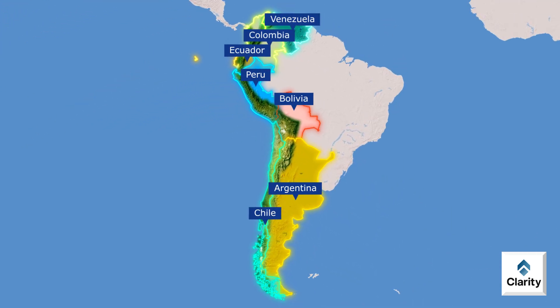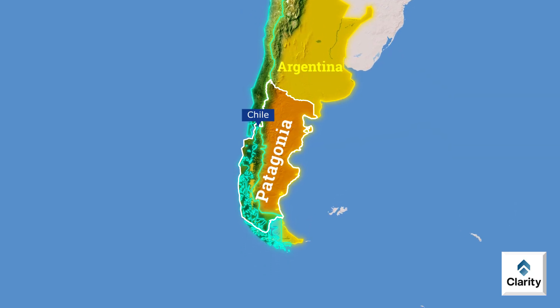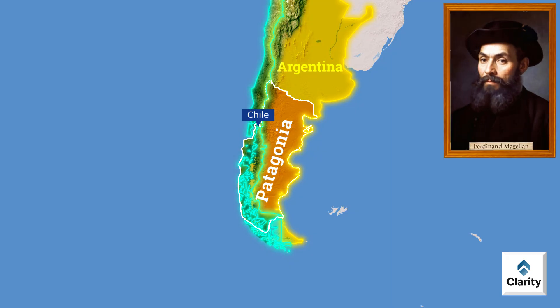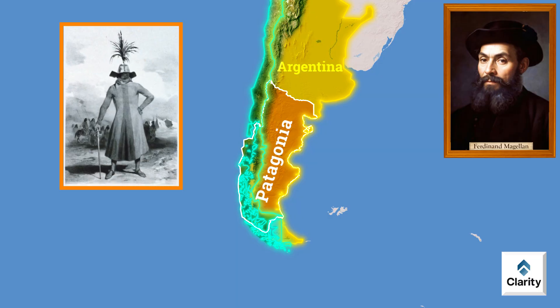On the eastern side of the continent, geographical features differ greatly. The southern region here is known as Patagonia. Patagonia covers parts of two countries — Argentina and Chile. Patagonia got its name from Ferdinand Magellan's expedition. Early European explorers saw local indigenous people who were unusually tall. Europeans called them Patagons, meaning big feet or giants. Hence the name Patagonia stuck for this region.